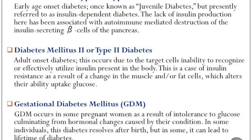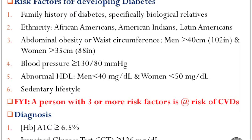Type 2 diabetes is an adult-onset diabetes. It occurs due to target cells' inability to recognize or effectively utilize insulin present in the body. In this case, insulin resistance as a result of a change in muscle or fat cells normally alters the tissues' inability to uptake glucose.